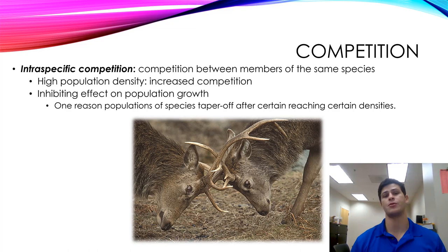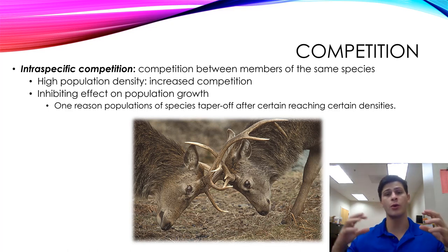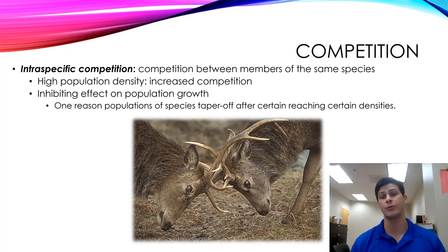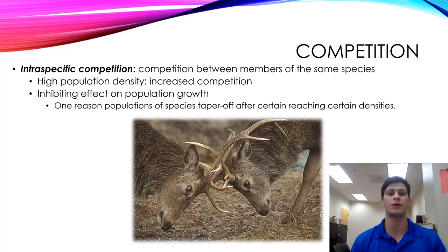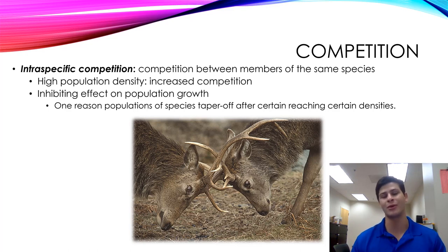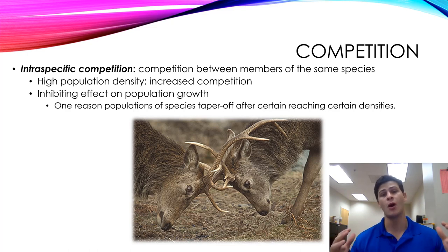There are two types of competition: competition within organisms of the same species, and competition between organisms of different species. The first is intraspecific competition — competition between members of the same species. This occurs at higher population densities, something we talked about at the end of Chapter 3. Higher population densities of a single species increase competition for resources, and this is a density-dependent limiting factor.